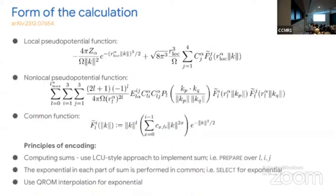Our local pseudopotential and non-local pseudopotential functions are written in terms of functions F-tilde, which are polynomials in K with an exponential. The difficulties arise from the sum and from the exponential. For the sum, we use a linear combination of unitaries style approach, with a control register prepared in a superposition over L, I, and J — in addition to the superposition over N. This means we only need coherent arithmetic on the quantum processor for the argument; we don't need an explicit sum.